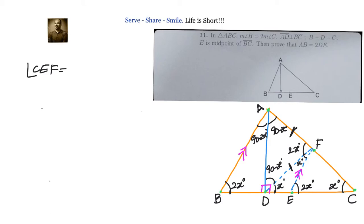Angle CEF is 2x because we know AB is parallel to EF. When two lines are parallel, corresponding angles are equal. Therefore, angle CEF is 2x as AB parallel to EF.